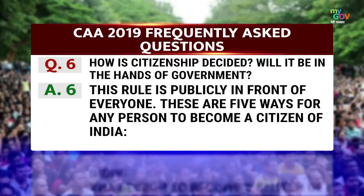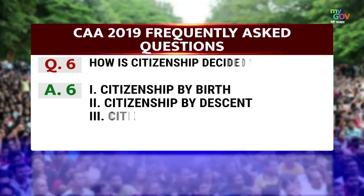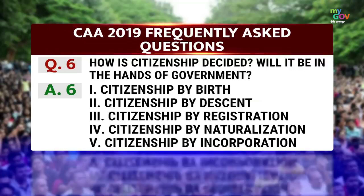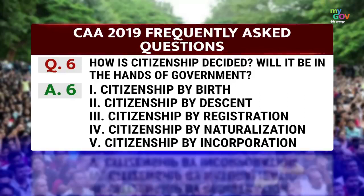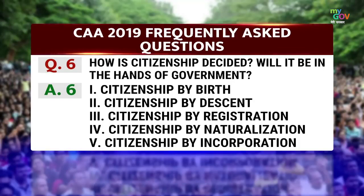There are five ways for any person to become a citizen of India: citizenship by birth, citizenship by descent, citizenship by registration, citizenship by naturalization, and citizenship by incorporation.